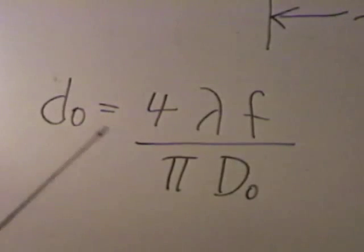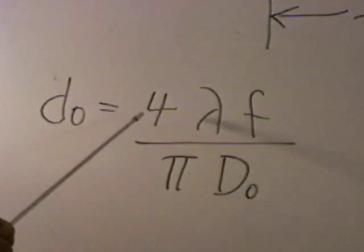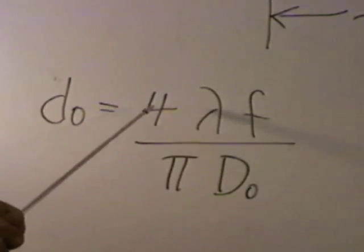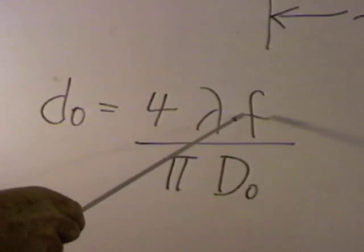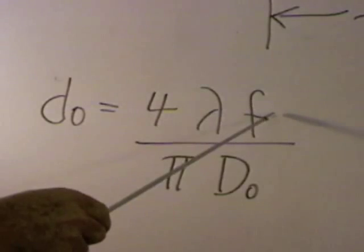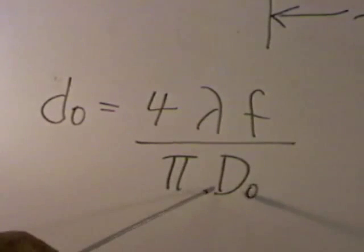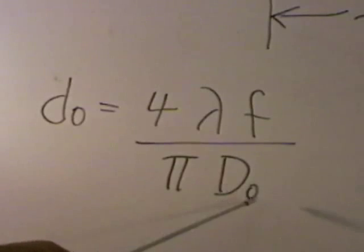The diameter of that spot is governed by this equation, which is 4 times the wavelength of your laser, times the focal length of your lens that you're using in your setup, divided by pi, times the input width of your laser beam.